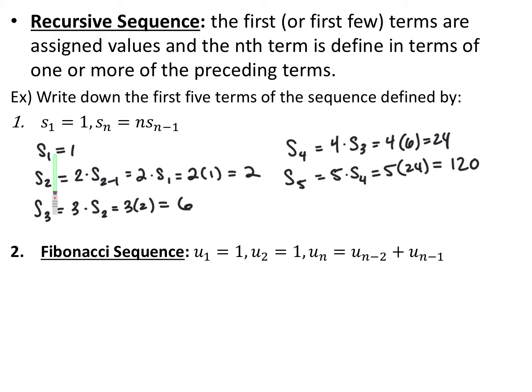So it's always the term number times the previous term. If I want to write out the first five terms: they already give us s sub 1 is 1. So s sub 2 is n, which is 2, times s of 1, the previous term — so 2 times 1 equals 2. s sub 3 is 3 times s sub 2, so 3 times 2 is 6. s sub 4 is 4 times 6, so 24. And s sub 5 is 5 times 24, so 120. You're using previous terms to find the current term.